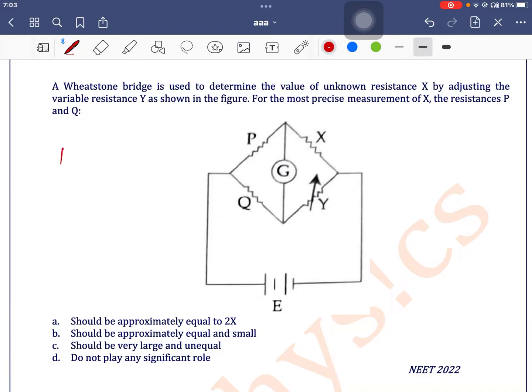Now see here, according to the balancing condition of Wheatstone bridge, we can write P by Q is equal to X by Y.